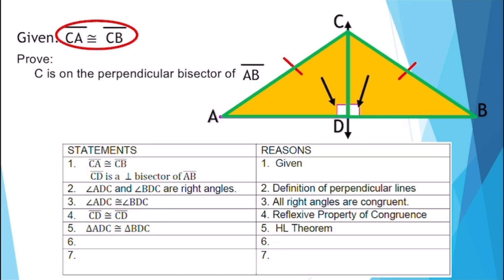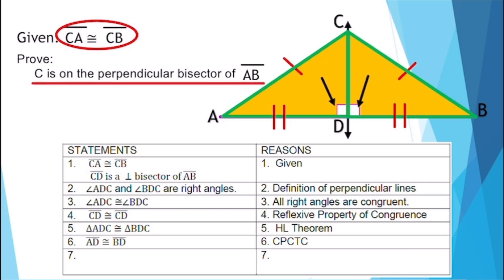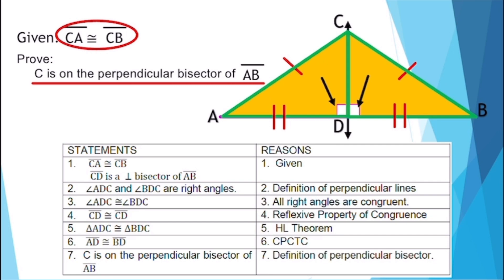For our sixth statement, line segment AD is congruent to line segment BD, by CPCTC. For our last statement, C is on the perpendicular bisector of line segment AB, by the definition of perpendicular bisector.